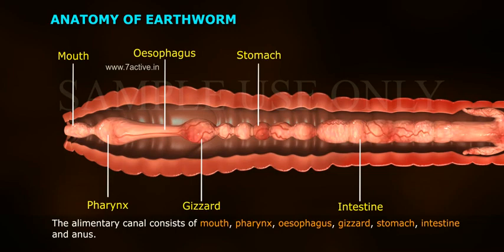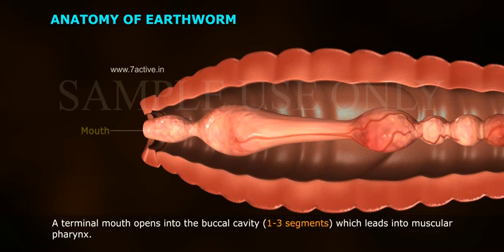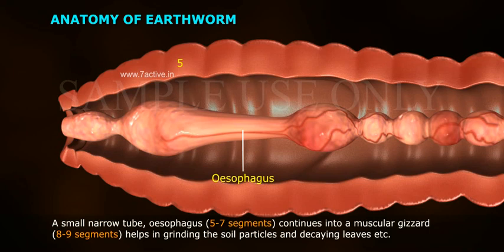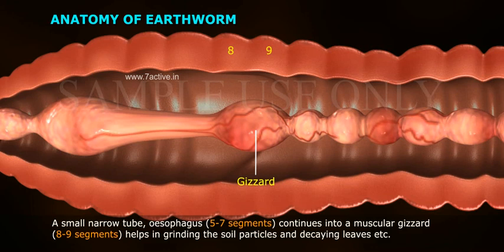A terminal mouth opens into the buccal cavity (segments one to three), which leads into the muscular pharynx. A small narrow tube, the oesophagus (segments five to seven), continues into a muscular gizzard (segments eight to nine) that helps in grinding soil particles and decaying leaves.